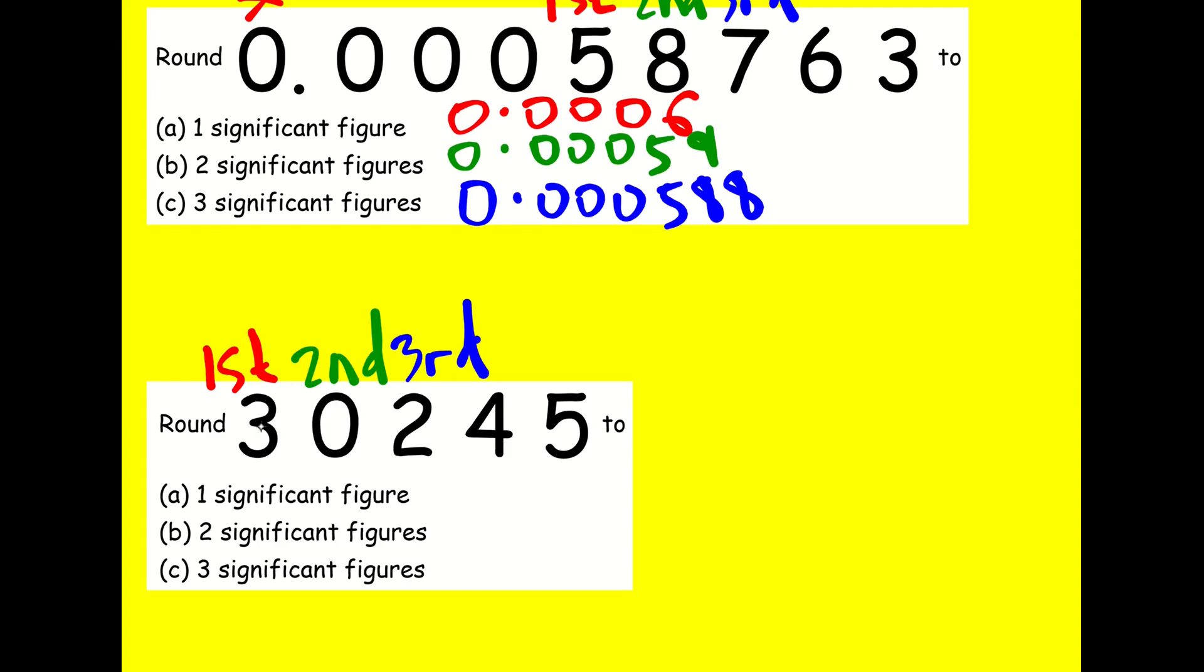So rounding it now, we're going to look at the three. We're going to keep it the same. So it becomes 30,000. We're going to look at the zero. That's going to stay the same. So that is also going to be 30,000 to two significant figures. That's okay. And then the last one, three significant figures. Three, zero, two, zero, zero.